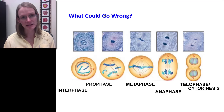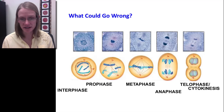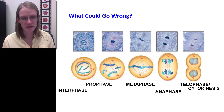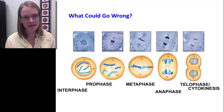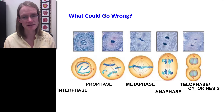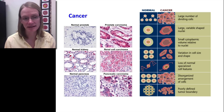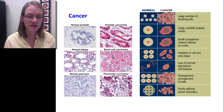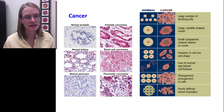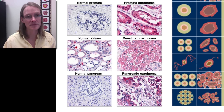Many cells undergo reproduction through the cell cycle many times throughout an organism's lifetime, creating potential for errors that don't get caught. Cancer is essentially out-of-control cell growth — division goes terribly wrong, becomes unregulated, and forms a tumor, which in some cases interrupts normal cell functioning and causes serious health issues or death. We can see clear differences when comparing normal cells to cancerous cells in terms of number, size, shape, loss of function, disorganization, and cell boundaries.